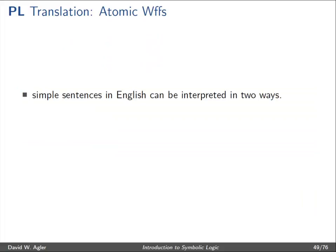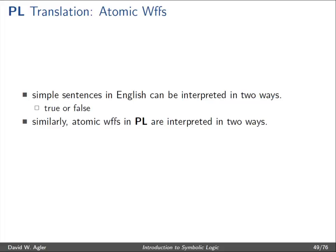Simple sentences in English can be interpreted in two ways. We could think of these simple sentences as true or false — "John is kind" is either true or false, depending upon whether or not he's kind. Similarly, atomic well-formed formulas or single propositional letters are interpreted or evaluated in one of two ways: either they're T or F, standing for true or false.